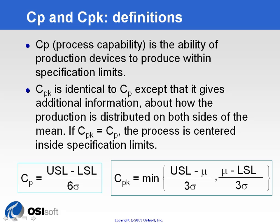Specification limits are really different from control limits, which are calculated or derived from the natural variability of the process. The CP process capability index is the first index, and it is derived as the difference between the upper specification limit minus the lower specification limit, divided by 6 sigma, which is the whole spread of the distribution.